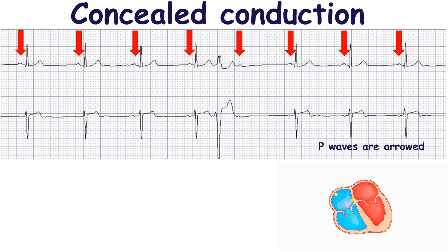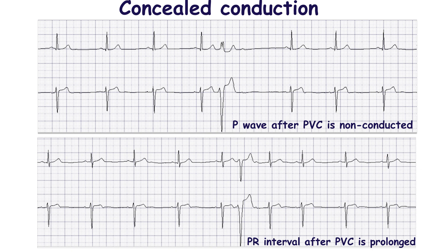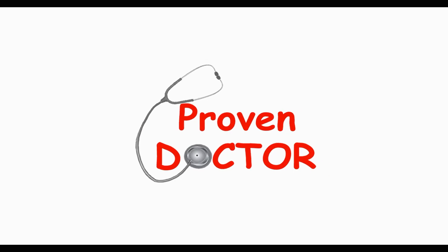The impulse passes to the atrioventricular node, but part of it remains in the refractory period after the premature ventricular complex. So the impulse is not conducted through to the ventricles, or a prolongation of the PR interval may occur instead.